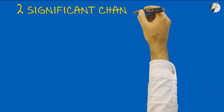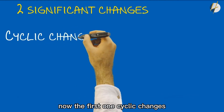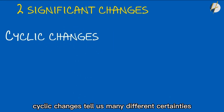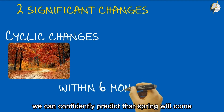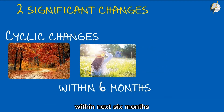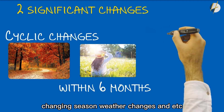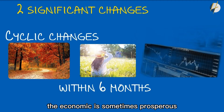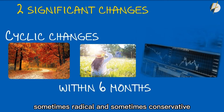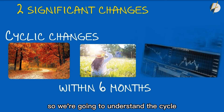There are ways to follow, because everything changes according to certain patterns. First, we can find certainty through two significant types of changes. The first is cycle changes. Cycle changes tell us many different certainties — for example, it is autumn in the northern hemisphere, and we can confidently predict that spring will come within the next six months. Nature is full of periodic changes: changing seasons, weather changes, and so on. Economics and politics also have cycles — the economy is sometimes prosperous and sometimes sluggish, and politics is sometimes radical and sometimes conservative. If you grasp it at the right time, you'll be successful.